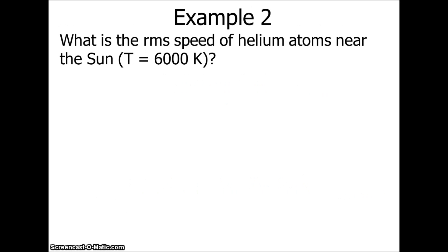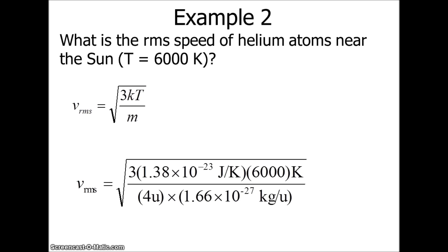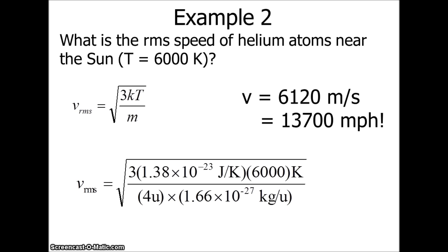What is the root mean square speed of helium atoms near the sun, where the temperature is 6000 K? V_RMS = √(3k_BT/m). Plugging in the Boltzmann constant, the temperature, and the mass of helium — an alpha particle has 4u × 1.6 × 10⁻²⁷ kg/u — we get 6,120 m/s, or about 13,700 miles per hour. That's how fast helium particles are moving on the sun's surface.